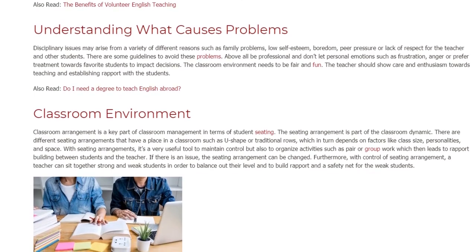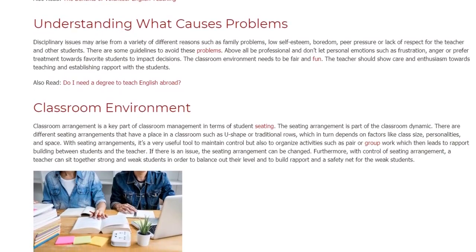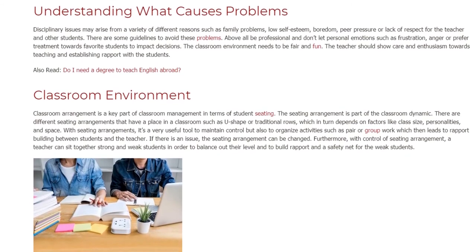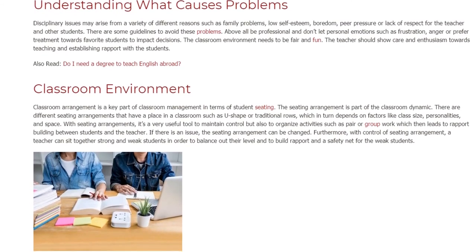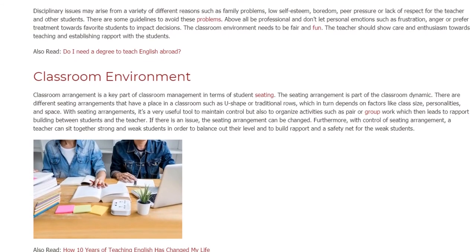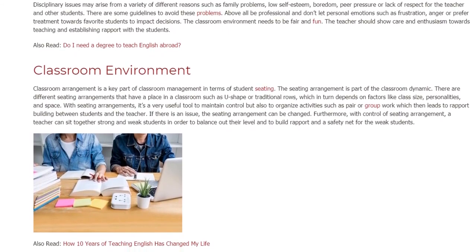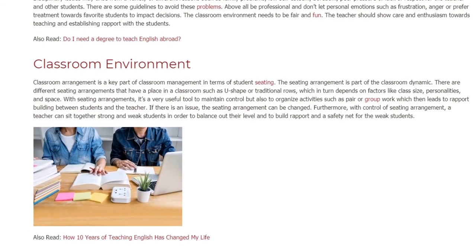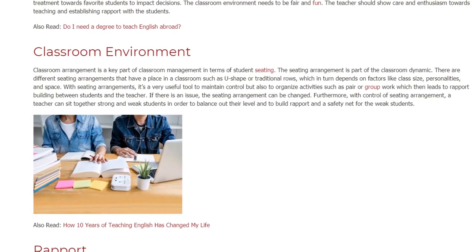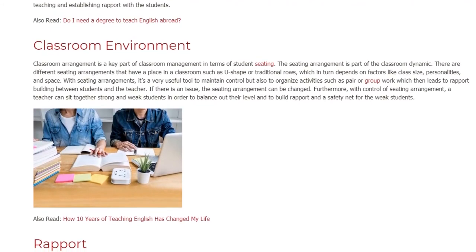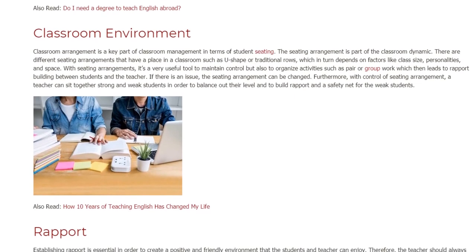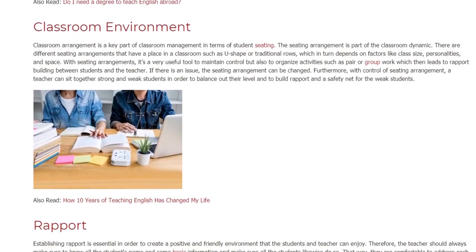Seating arrangements are a very useful tool to maintain control but also to organize activities such as pair or group work, which then leads to rapport building between students and the teacher. If there is an issue, the seating arrangement can be changed. Furthermore, a teacher can seat together strong and weak students in order to balance their level and to build rapport and a safety net for the weaker students.